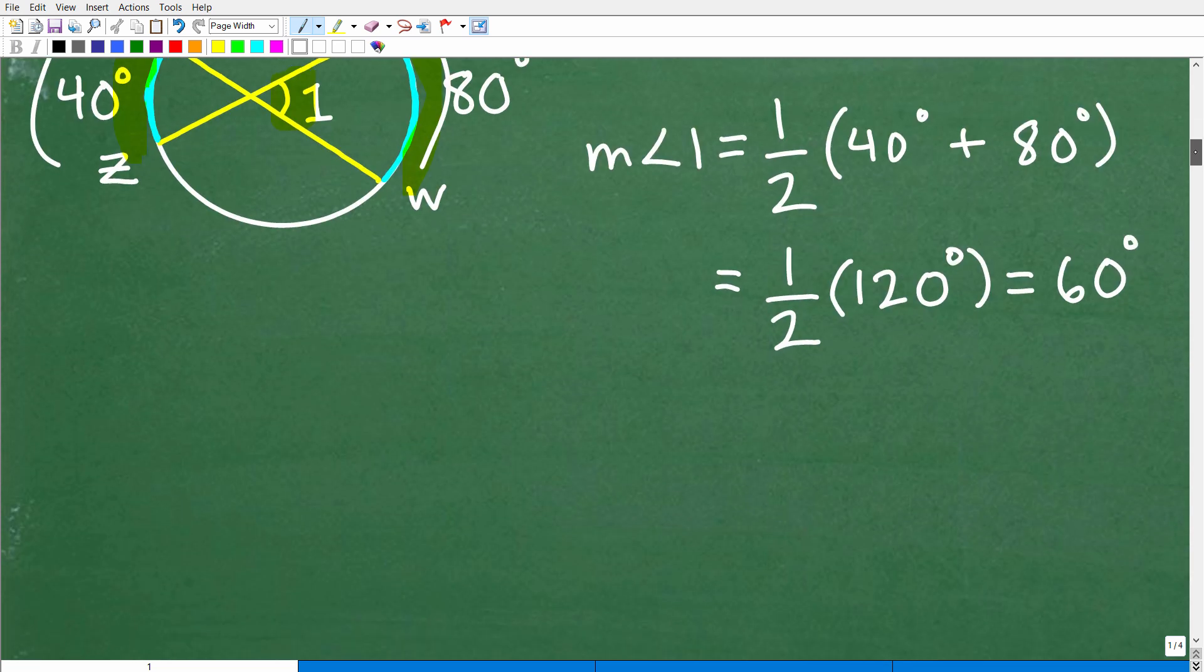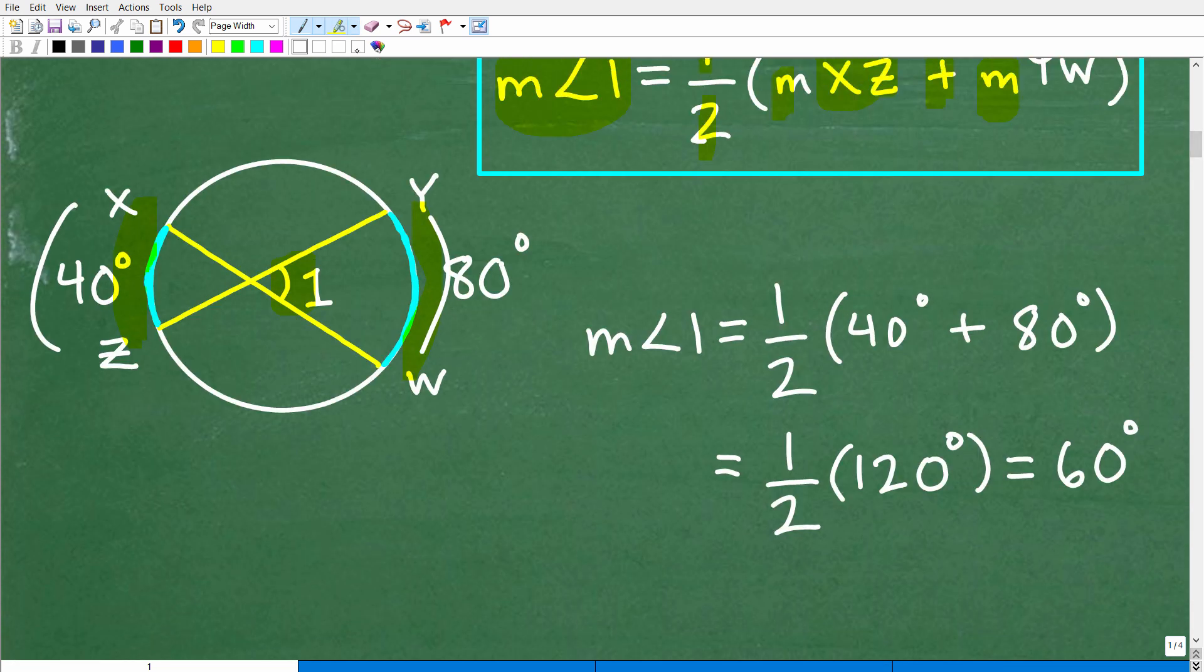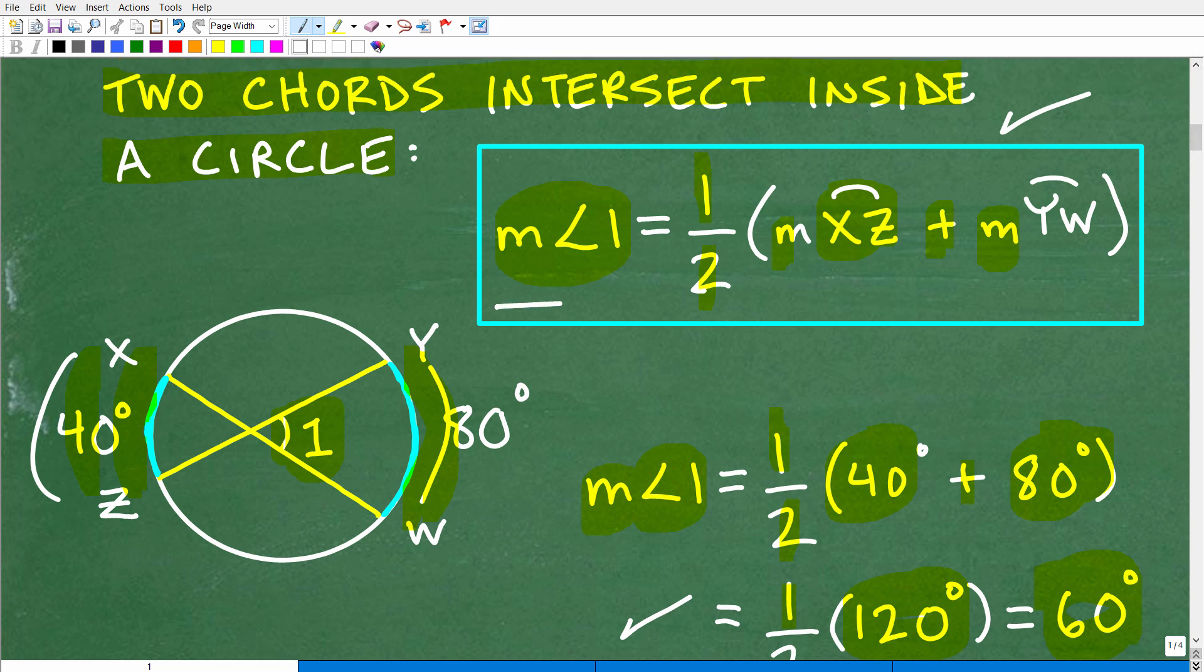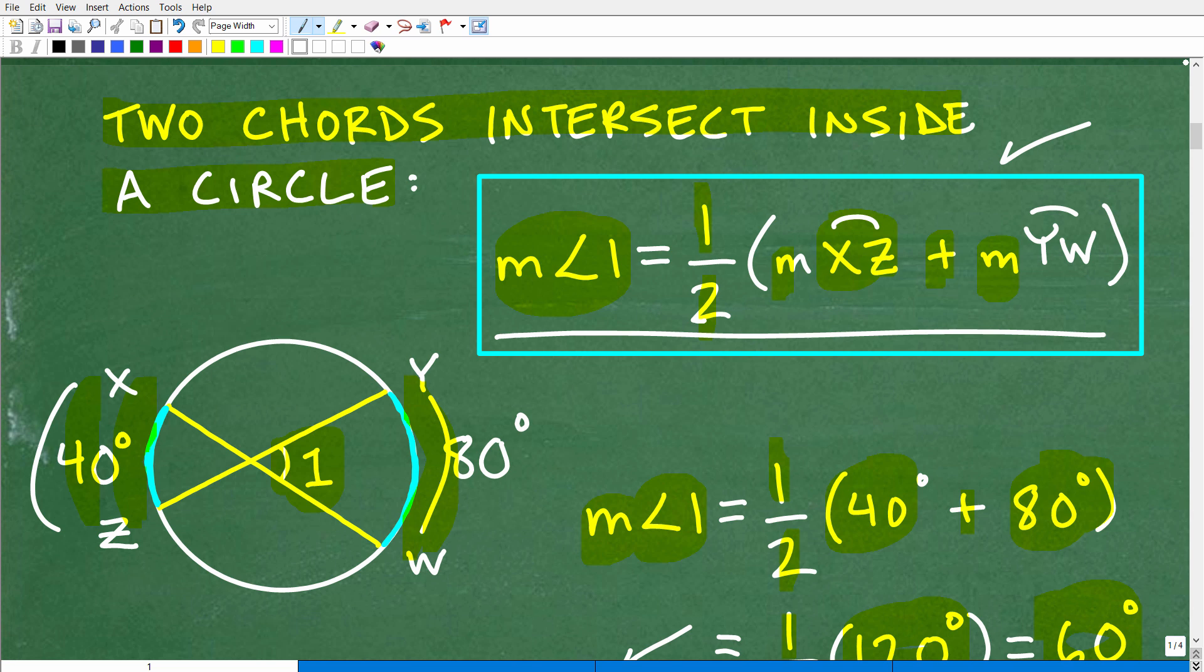That's what the formula would look like. And oftentimes the formula looks scarier than the actual thing we need to do. We just simply need to average the arcs. So let's go ahead and do that now. The measure of angle one right here is going to be one half of this arc, that's 40 degrees, plus this arc over here, that's 80 degrees. So 40 and 80 is 120, one half of that is 60 degrees, pretty easy stuff.